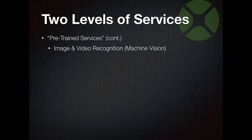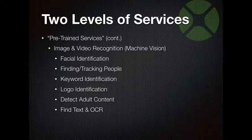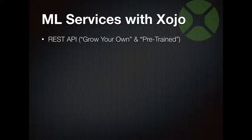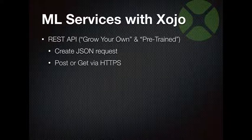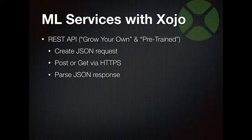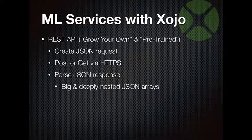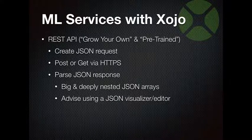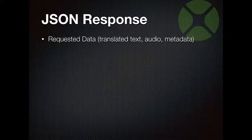There are also pre-trained machine vision services. So how do we access all this with Xojo? There's a REST API for both grow-your-own and pre-trained services. You create a JSON request, POST or GET it via HTTPS, and you get back a large, often deeply nested JSON response. For that video, the response had over 7,000 elements in the array. You really need a JSON visualizer or editor because it's easy to get confused about where things are.